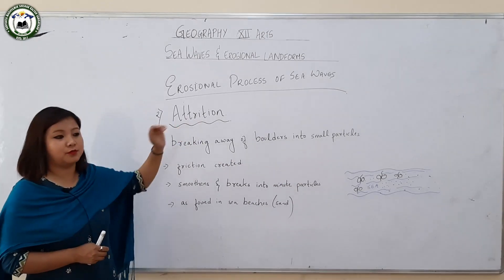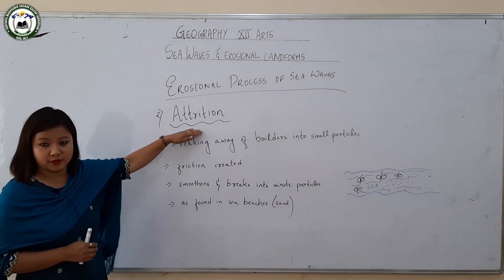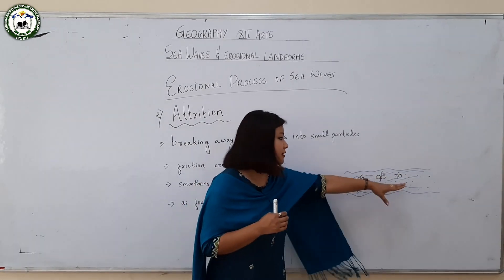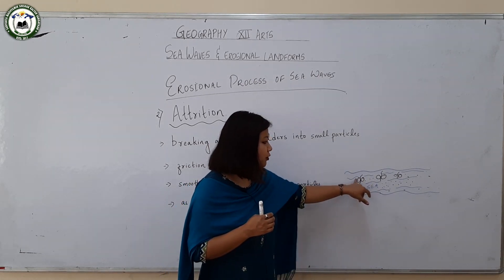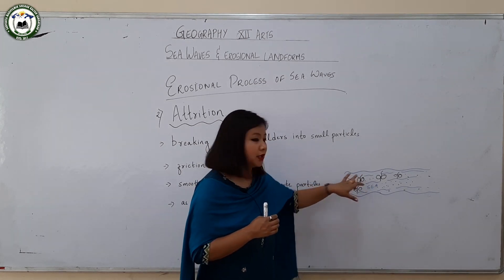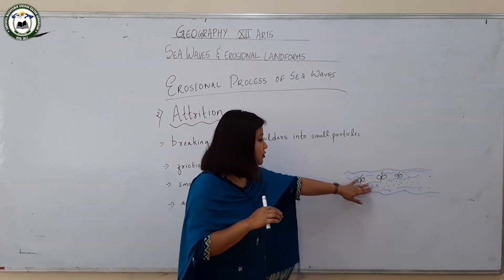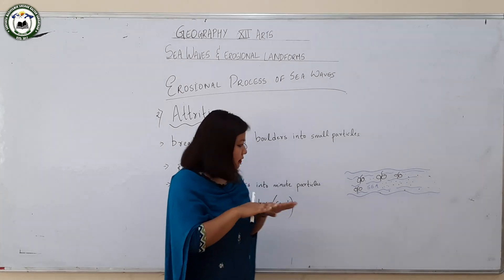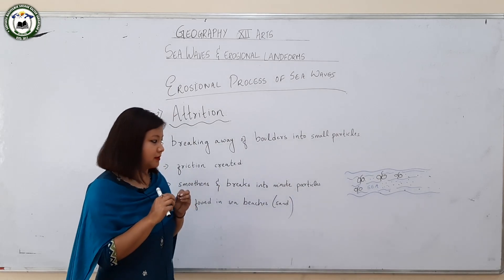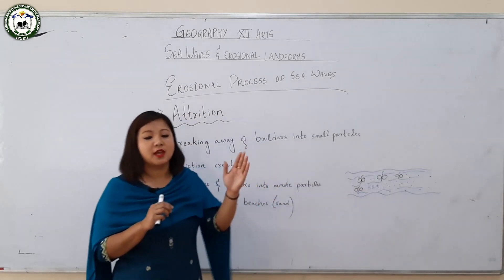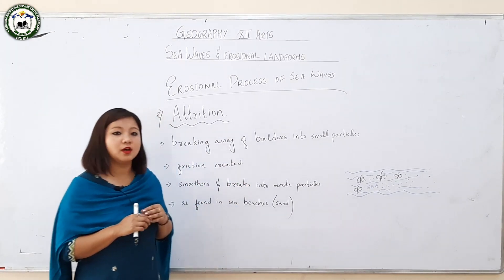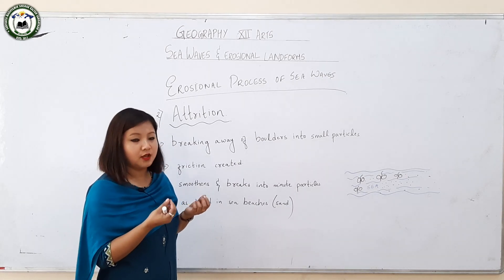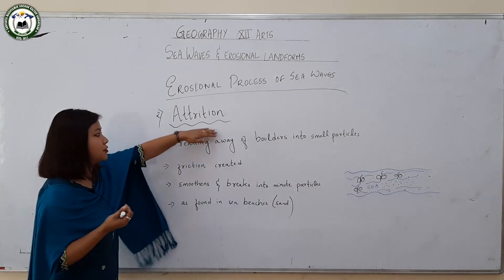Next is attrition, which also refers to the breaking down of rock particles into smaller pieces. As shown in the diagram, large or medium-sized boulders in the sea come into contact with each other, creating friction. Repeated friction causes the rocks to become smoother and eventually disintegrate into very minute particles. These minute particles are eroded and deposited on beaches — this is how sand is formed through attrition.